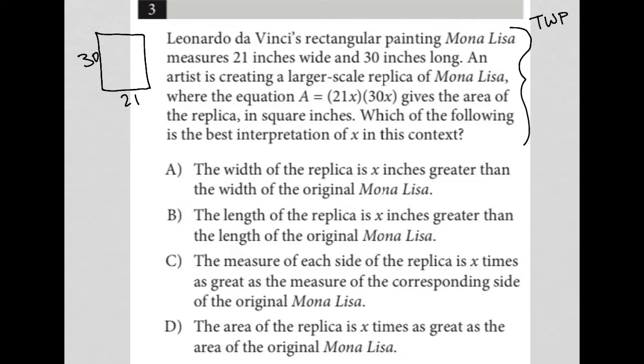An artist is creating a larger scale replica of Mona Lisa where the equation A equals 21X times 30X gives the area of the replica. Okay, well, that makes complete sense,